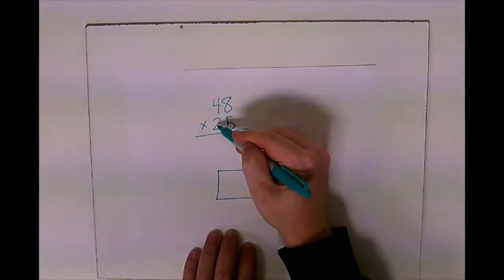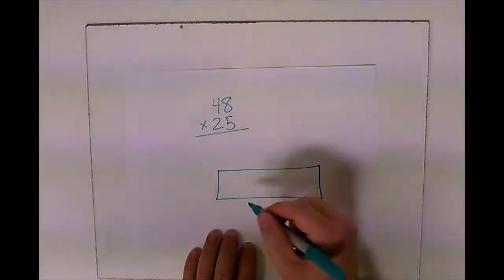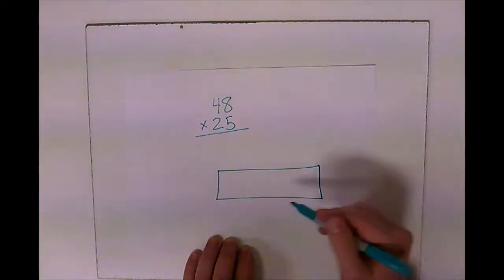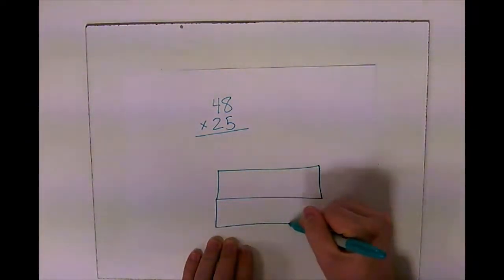So instead of doing one line and then drawing a couple of lines down here, we're actually going to do two rows and two columns, and I'll show you why.